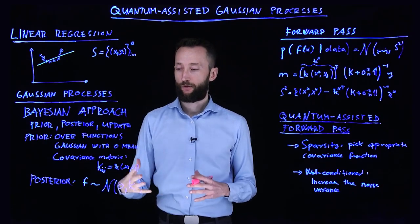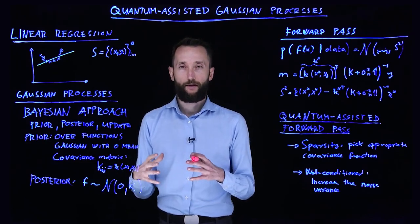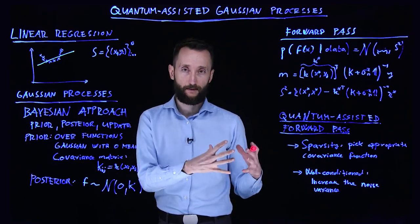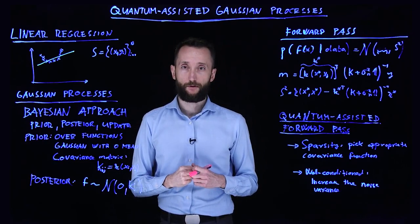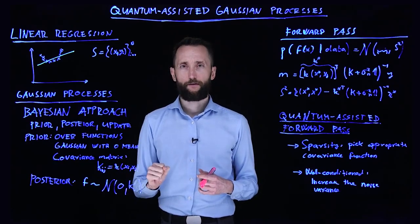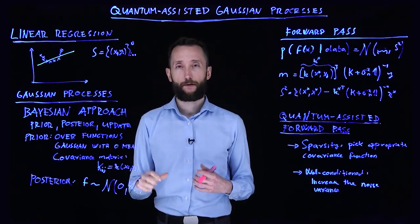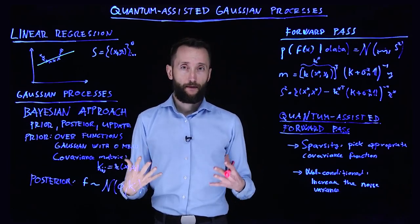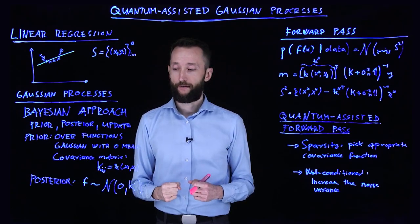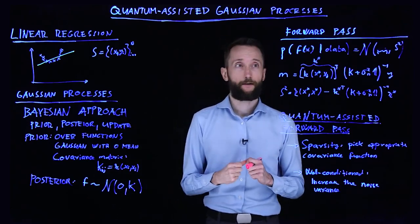And this covariance matrix also ensures that whatever is closed in the input space stays reasonably closed in the output space. So you can think of the choice of the kernel function or the covariance matrix as some kind of hyperparameter that you can tune to fit your actual data. And then you can run your Gaussian process to get some kind of fitting.